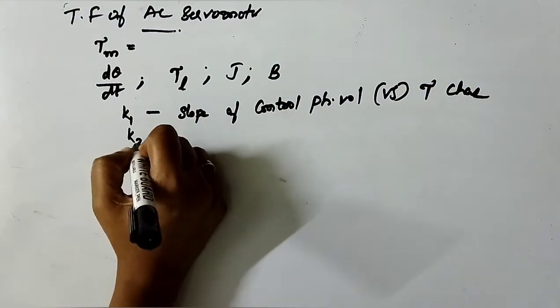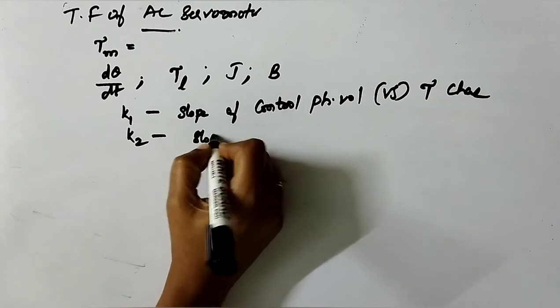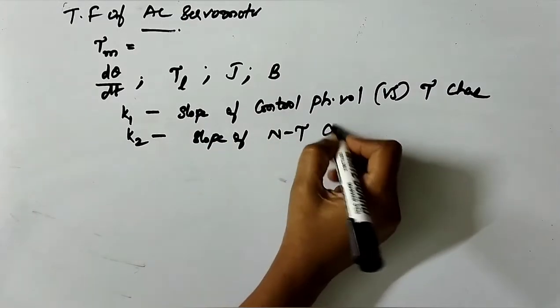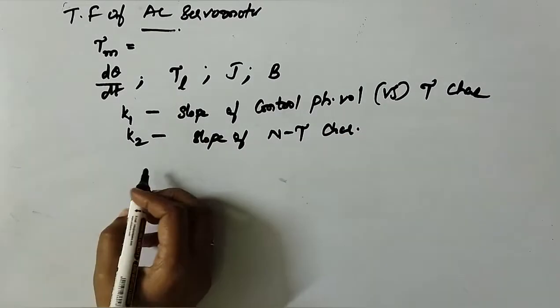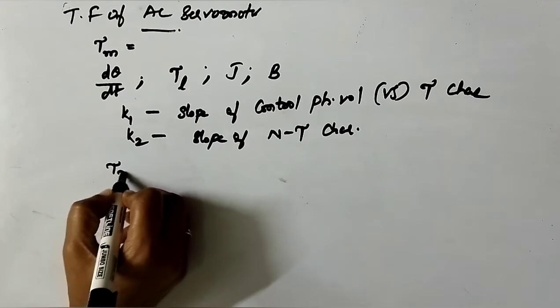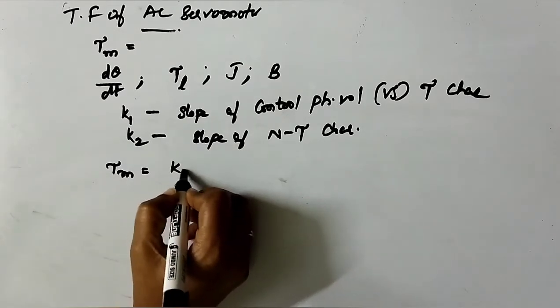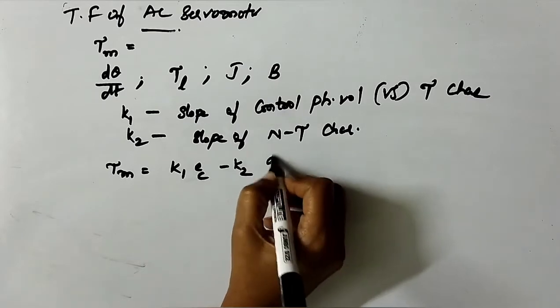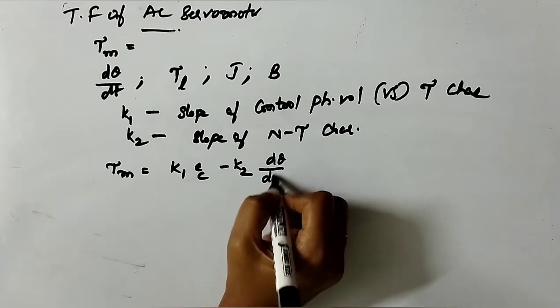K2 is slope of speed torque characteristics. Now, torque developed by the motor is τm = K1·Ec - K2·dθ/dt. Now, this expression is obtained by going for mathematical modeling using Taylor series and with the initial condition.